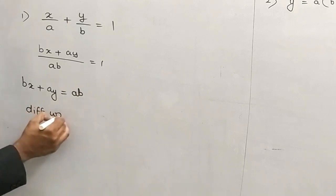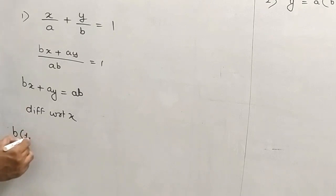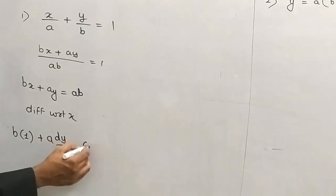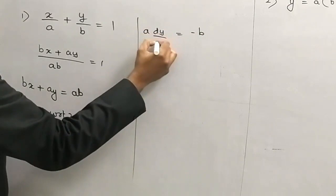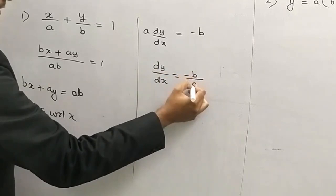Toh yeh kya ho jaega dekho — bx ka derivative b × 1, ay ka derivative a times dy/dx. Ab constant ka derivative 0 ho jaega. Plus b uss side jaega toh ho jaega minus b. Yeh hai a × dy/dx. A uss side jaega toh divide karega — jaega minus b upon a.